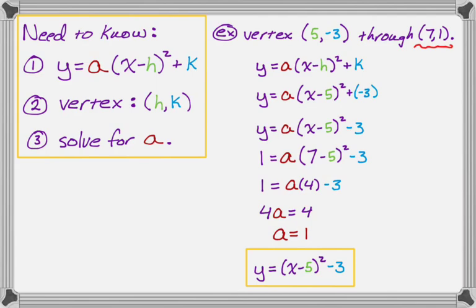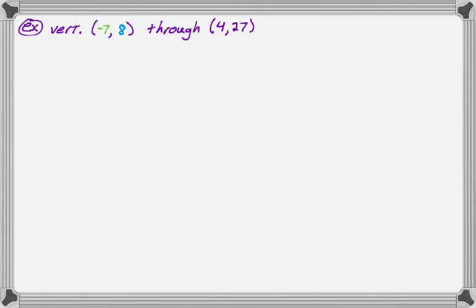Okay, I'm going to do one more example, because once you get really good at this, they don't change, so if you've memorized the formula, if you understand what h and k are, and then you just know how to solve for a, you pretty much know how to do these every time. So let's do one more example, and make sure that's true. So the vertex of this thing is going to be negative 7, 8, and then the point it goes through is going to be 4, 27.